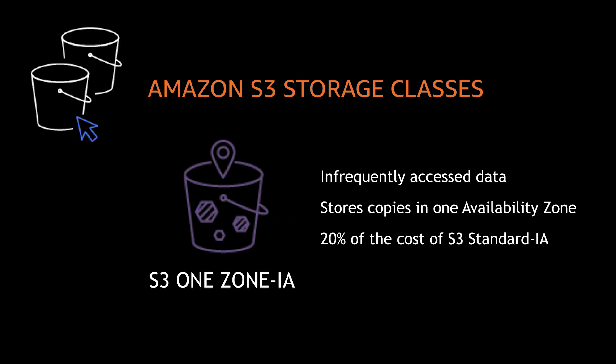Amazon S3 One Zone-IA is like S3 Standard-IA and is designed for infrequently accessed data, but only stores copies within a single availability zone at 20% of the cost of S3 Standard-IA. This makes S3 One Zone-IA an attractive and cost-effective choice for secondary backup copies, copies of on-premises data, or recreatable data that does not require the same levels of resiliency.